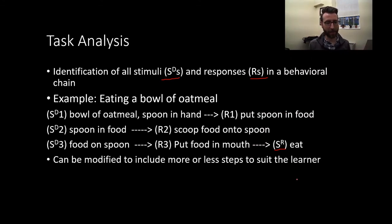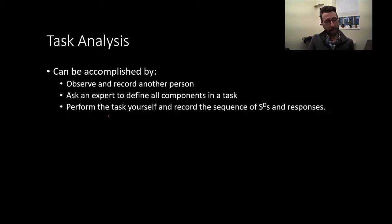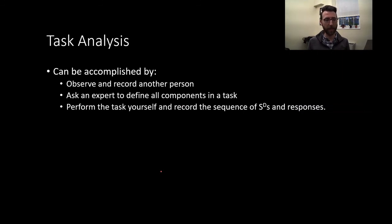You might imagine if you've never used chopsticks, you might need more instructions on how to use them, how to hold them, and how to operate them than somebody with experience. Task analysis can vary based on what your goal is — you might need a more complex breakdown for somebody who needs more detail, and a more simple one for somebody already well experienced with the behavioral chain. Task analysis can be accomplished in a number of ways: you can observe and record another person performing the task, recording all the steps in terms of stimuli, responses performed, and the eventual reinforcer. You could also ask an expert to define all the components of a task.